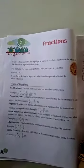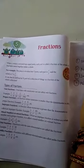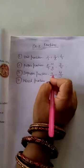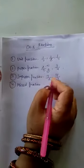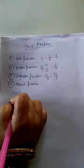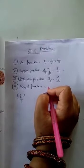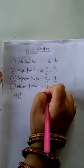Mixed Fraction: When an improper fraction is written as a whole number and a proper fraction, it is called a mixed fraction. For example, 3 by 2 is an improper fraction. If we divide 3 by 2, we get 1 remainder 1, so we write it as 1 whole 1 by 2.